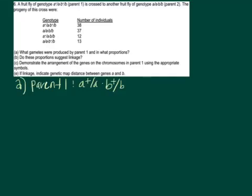I was asked to make a little video about parental linkages, so in order to explain this again in a video, I decided to use an example that we went over in class. Now there are more questions to this example, so I'll just go through all of them just in case that might be helpful. So in this question, just to refresh your memory, you have two parents, parent number one and parent number two, that were crossed, and these are their offspring.